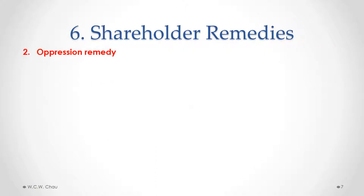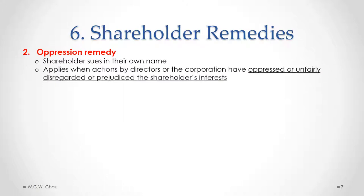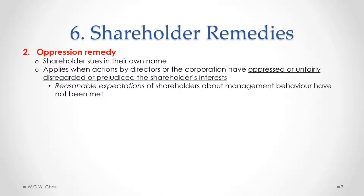The second remedy that a shareholder may have is called the oppression remedy, which also involves suing in court. With the oppression remedy, in contrast to the derivative action, the shareholder sues in their own name, not the corporation's name. The oppression remedy applies when actions by directors or the corporation have oppressed, unfairly disregarded, or prejudiced the shareholder's interest. That phrase has been interpreted fairly broadly. One way to look at it is to focus on the reasonable expectations of the shareholders — if those reasonable expectations about the way the company should be run by management have not been met, the affected shareholder could use the oppression remedy to stop or get damages for that behavior.